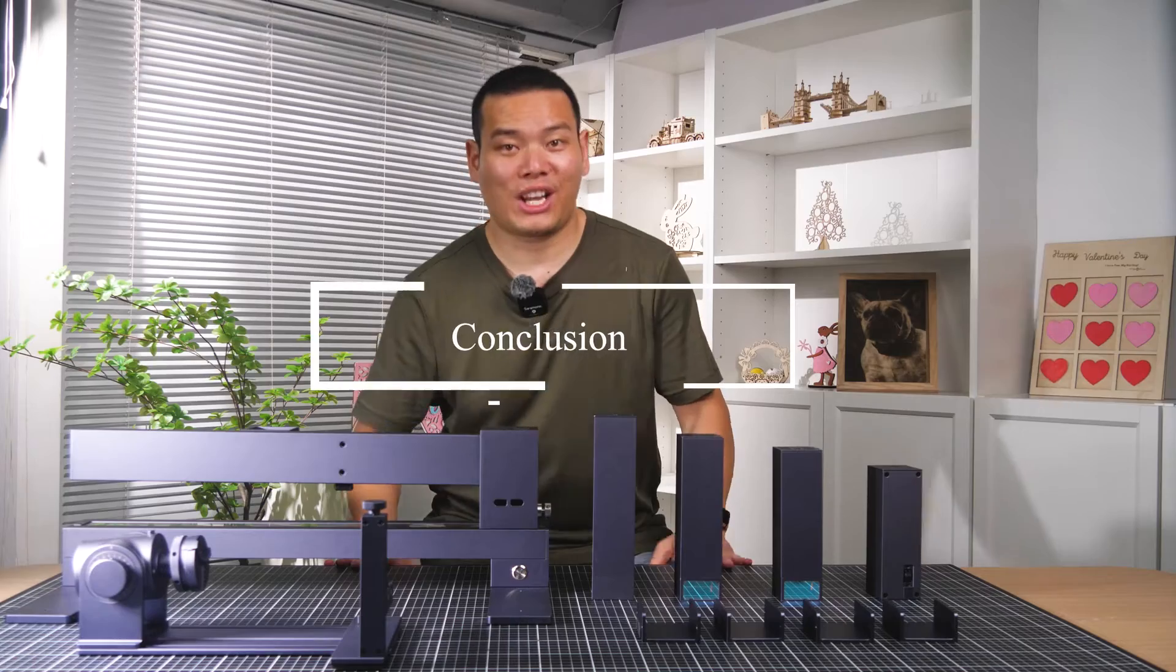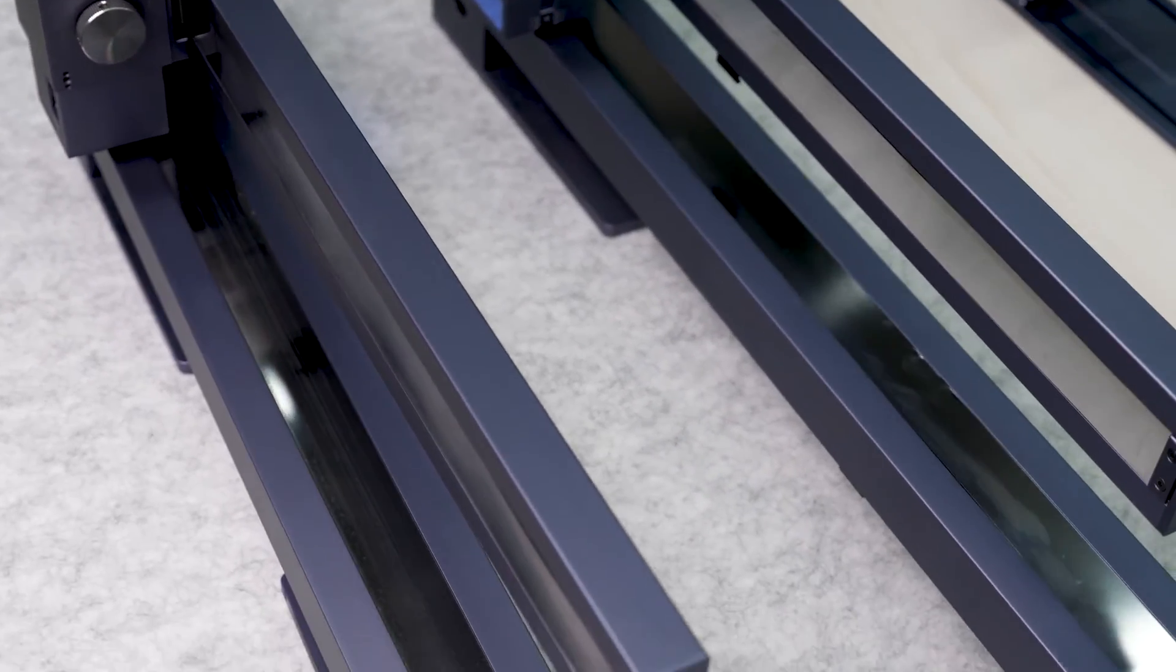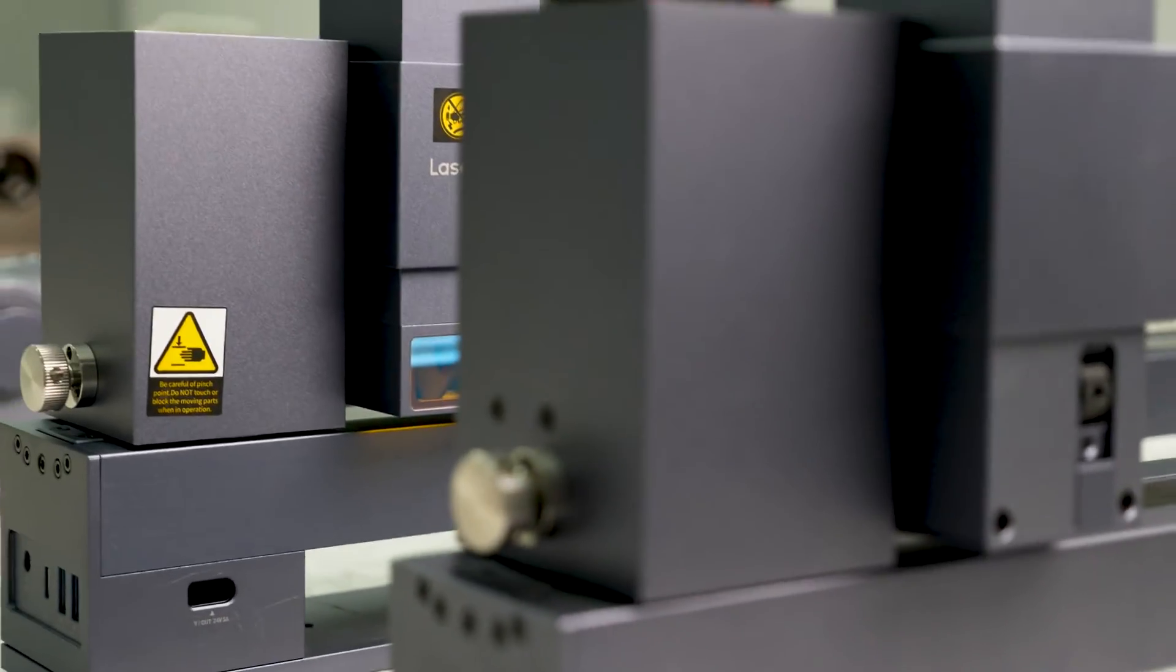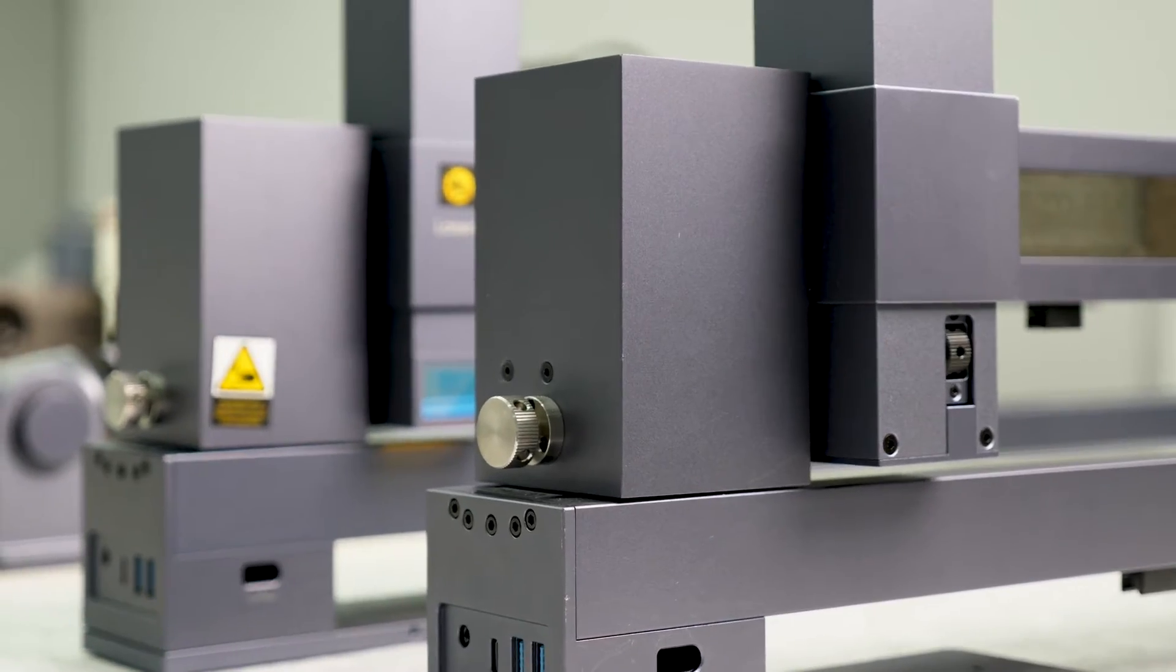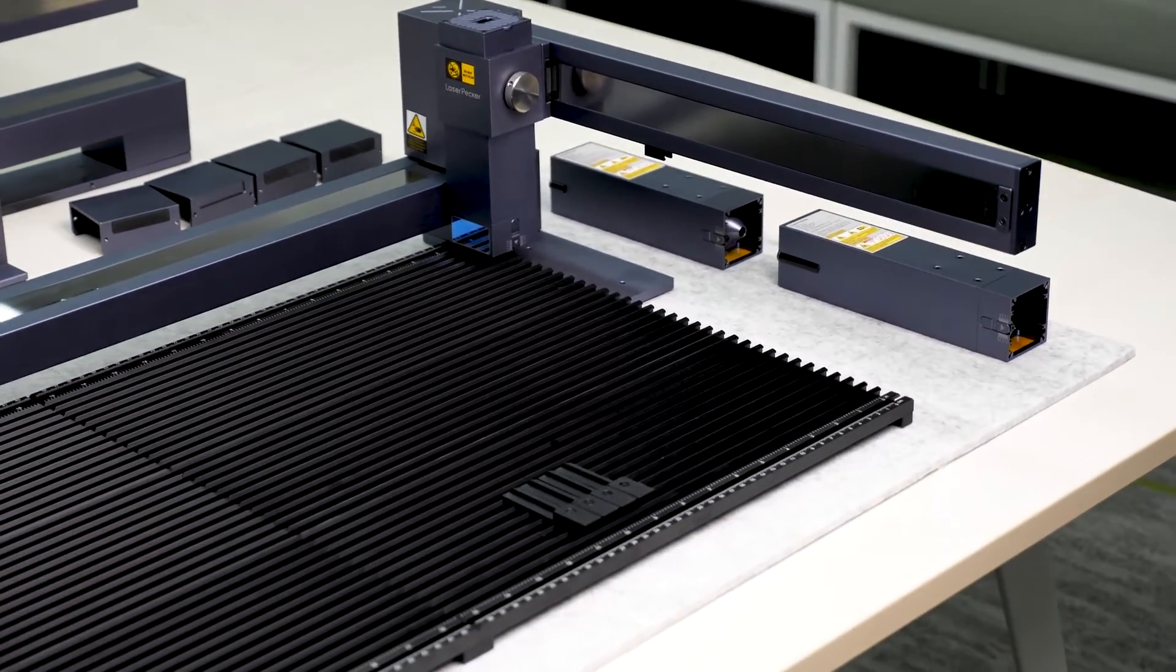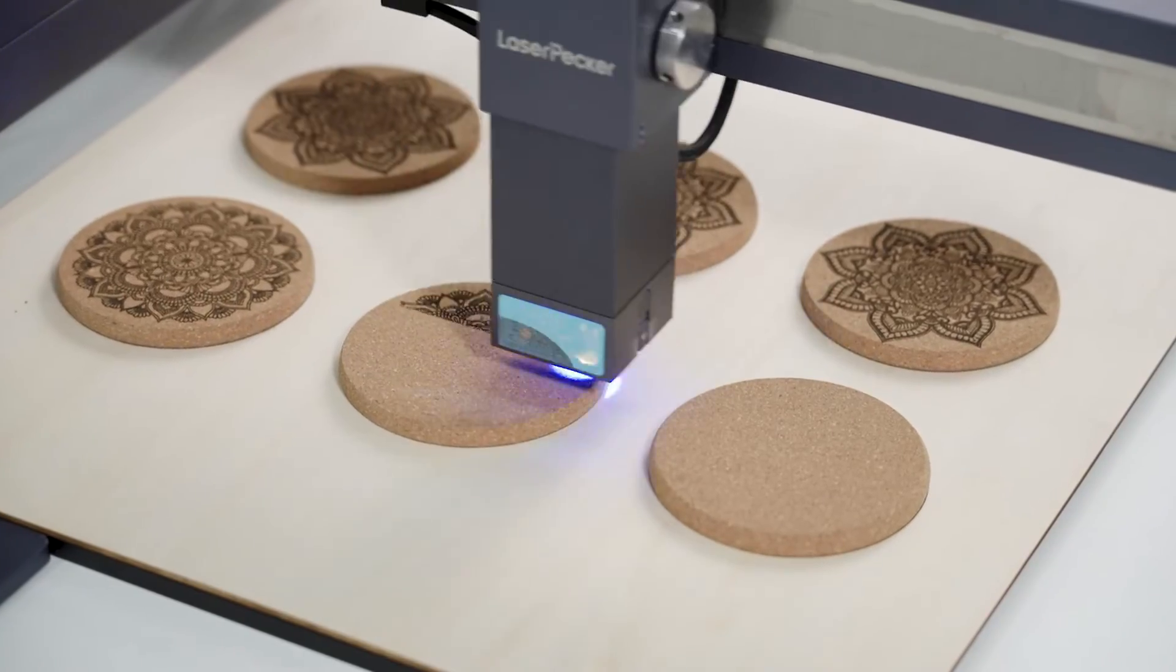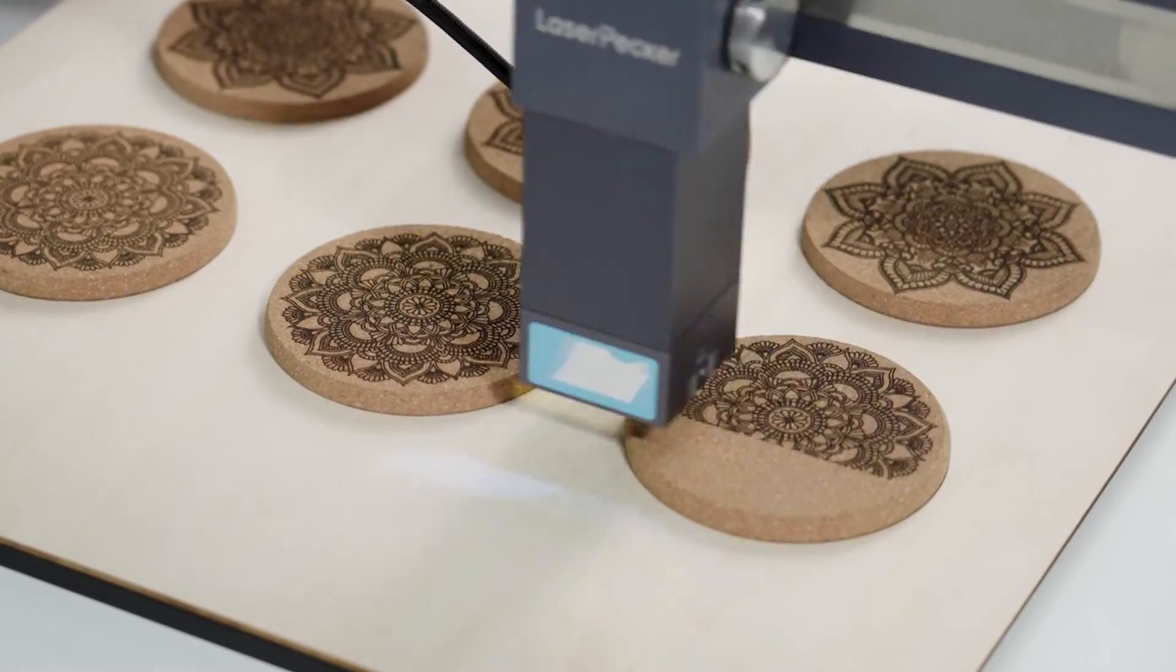So there you have it. To conclude, if you are looking for the best all-in-one laser engraver on the market that can handle both small and large engraving for your projects, the Laser Picker LX1 is definitely the one to go for. I've reviewed many laser engravers over the years, and the LX1 series is probably the best all-rounder that I would recommend to any newcomers or those who want the best for their business without breaking the bank.